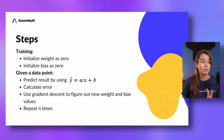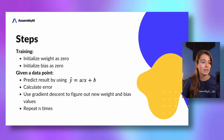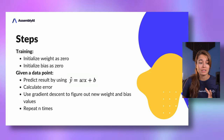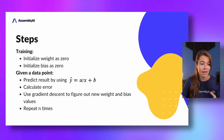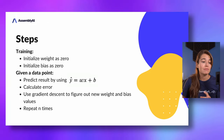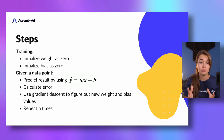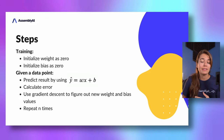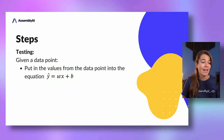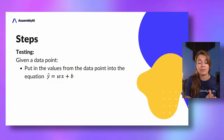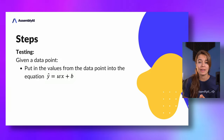To sum up, during training we initialize the weight and bias as zero, then given a data point we predict the result using the linear equation. We calculate the error that this line has on our data set, then use gradient descent and our learning rate to update the weight and bias. We repeat this a number of times determined by the person who created the model. During testing, given a data point, we calculate the result using this same equation.